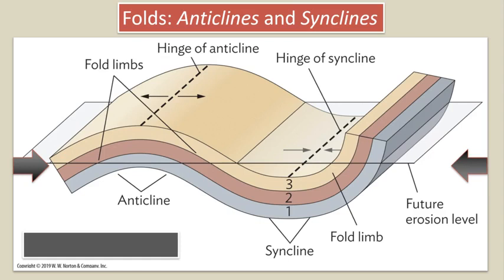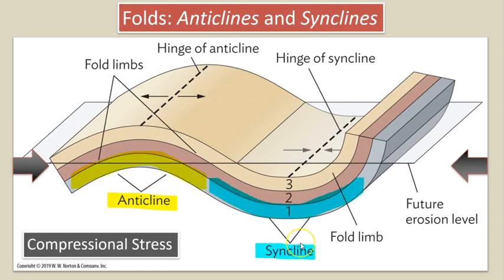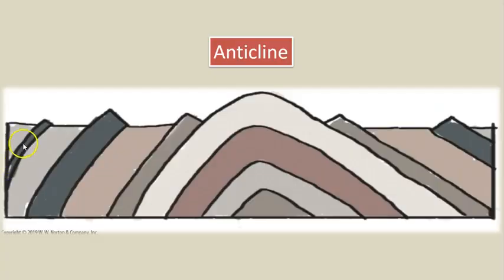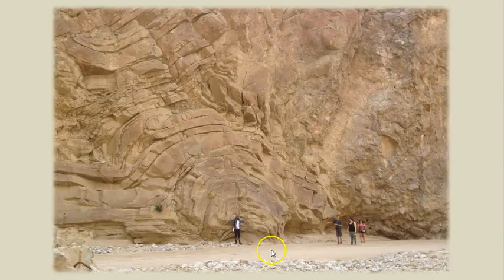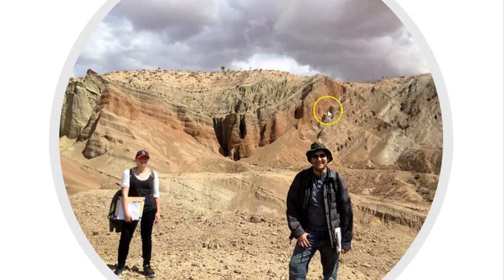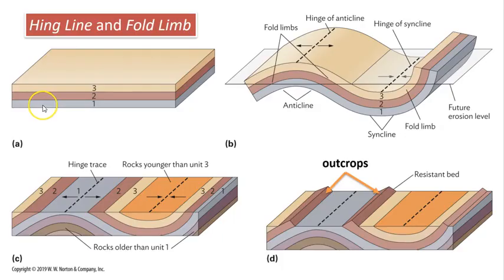Plastic deformation makes folds and is always caused by compressional stress. Upward-folded strata is called an anticline, while downward-folded strata is called a syncline. The imaginary line around which the strata is folded is called the hinge or fold axis, and the strata on either side of the hinge are the limbs of the fold. This illustration shows an anticline partially eroded along Earth's surface, and the progression from horizontal strata being deformed by compression into an anticline and a syncline, followed by erosion and exposure of the limbs.